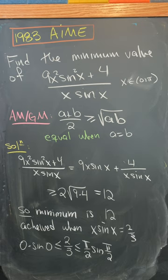And that achieves when x sine x is equal to 2 thirds. But that's definitely possible by the intermediate value theorem because 2 thirds is between that expression evaluated at 0 and that expression evaluated at pi over 2.